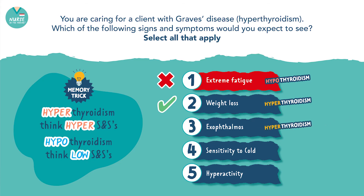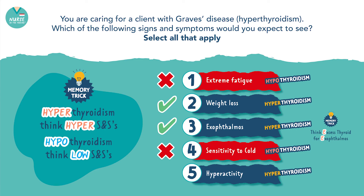Exophthalmos — clients with hyperthyroidism will have exophthalmos. Remember the memory trick: think excess thyroid for exophthalmos. Sensitivity to cold — this is a symptom of hypothyroidism, not hyperthyroidism; these clients tend to be sensitive to heat instead. Hyperactivity — yes, clients with hyperthyroidism have a lot of energy. That's all for the difference between the signs and symptoms seen in hyperthyroidism and hypothyroidism.